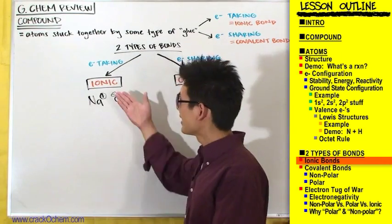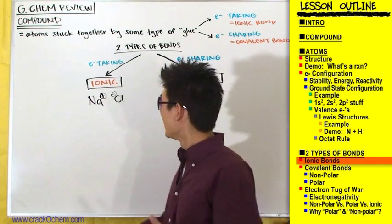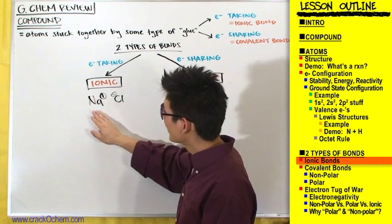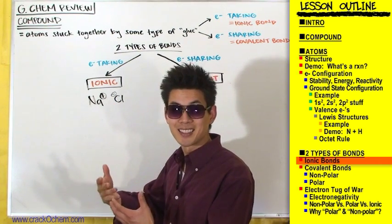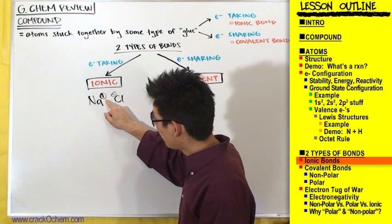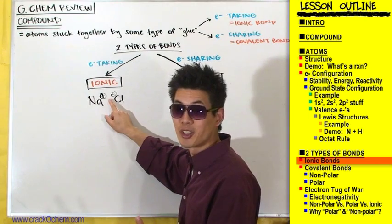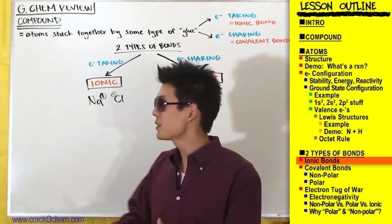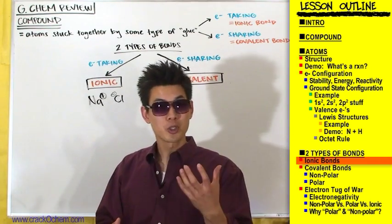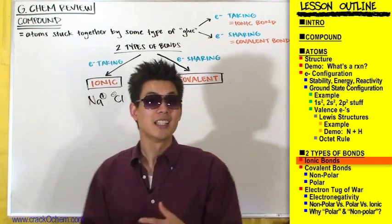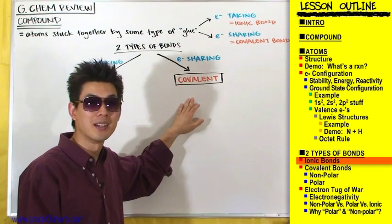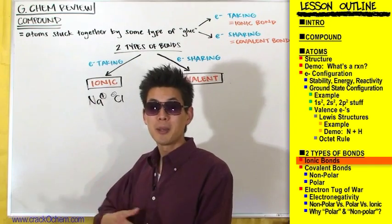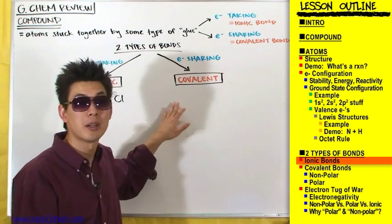One more thing about ionic bonds: the reason we call them ionic is because when chlorine took that electron away from sodium, they became ions. An ion is just an atom with a full positive charge or a full negative charge — and that word 'full' is key. Those are ions, and that forms an ionic bond. In comparison, partial positives and partial negatives are what you'll see when we talk about a type of covalent bond. When you see full charges, that's an ionic bond; partial charges, that's a covalent bond.